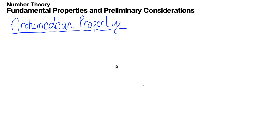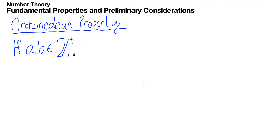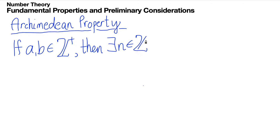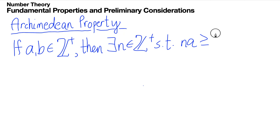The Archimedean property is one important property in number theory. It states that if A and B are positive integers — counting numbers — then there exists some N in the positive integers, which is also equal to your natural numbers, such that N times A is always greater than or equal to B.